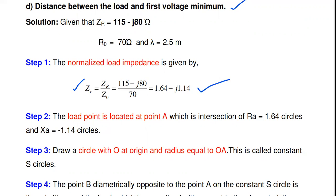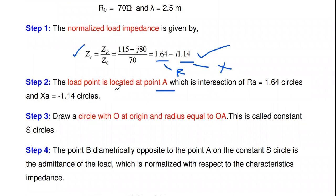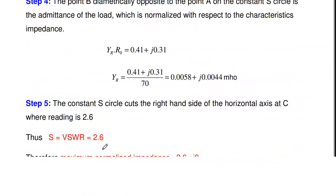The second step is to mark this normalized load impedance on the Smith chart. The real part is 1.64, so on the Smith chart select the resistance circle of value 1.64, and the reactance circle of minus 1.14. The intersection of resistance circle r = 1.64 and reactance circle xA = −1.14 is marked as point A.